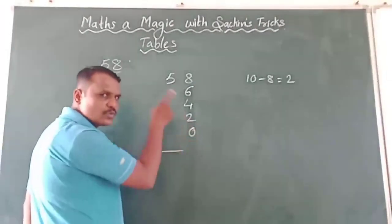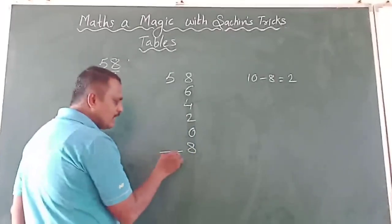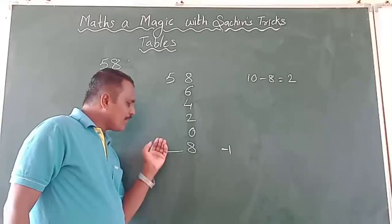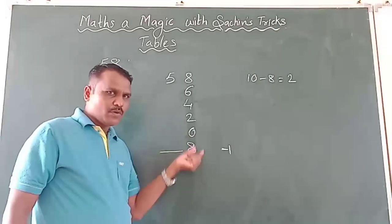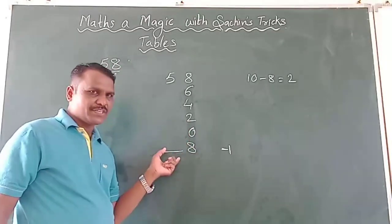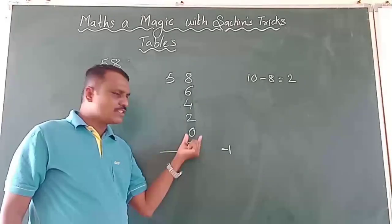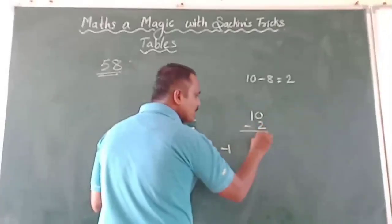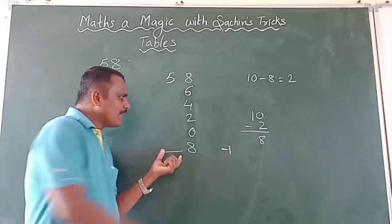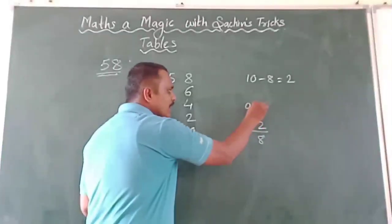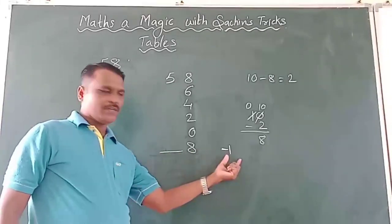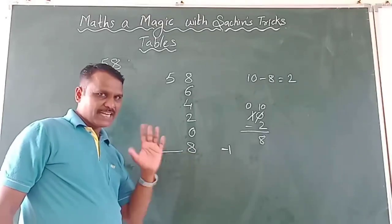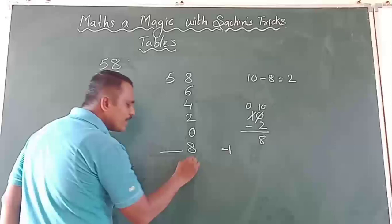When borrowing, the 0 becomes 10. So 10 minus 2 is 8. Whatever number comes at the tens place, we have to subtract 1 from it because we borrowed. I put a dash and minus 1 there to remind me that I have to subtract 1 at that point.